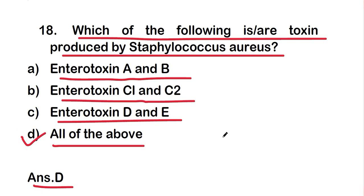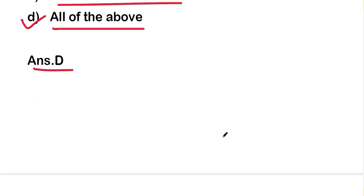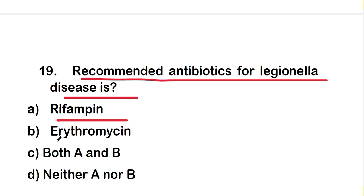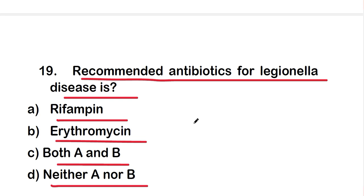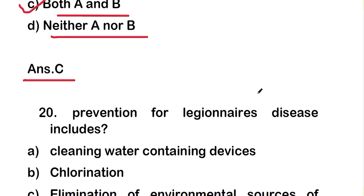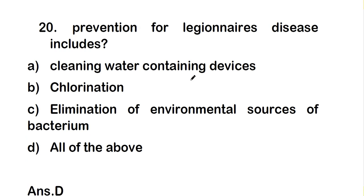Question 19: the recommended antibiotics for Legionella disease are rifampin, erythromycin, both A and B, or neither A nor B. The right answer is option C — both A and B — so the recommended antibiotics for Legionella disease are rifampin and erythromycin.